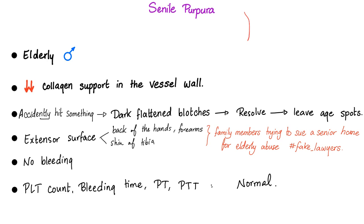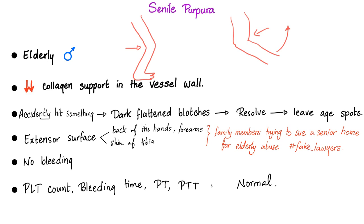Look at your antecubital fossa — this is the elbow. When you flex, you move your forearm upwards. But now look at your knee — your fossa is posterior, called the popliteal fossa. Why is it anterior at the elbow and posterior at the knee? Because they rotate differently during embryology. When you flex your forearm it moves upwards and forwards, but when you flex your lower leg at the knee it moves backwards. They are the opposite. So the extensor surface in the upper extremity is here, and in the lower extremity it's here — the shin of the tibia is extensor.